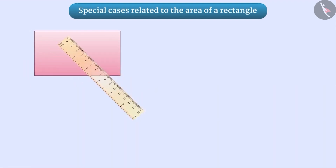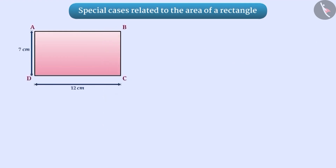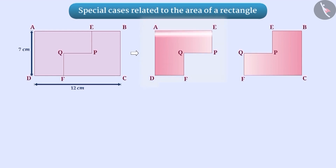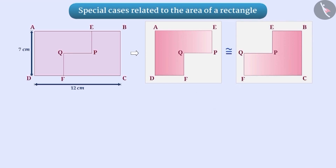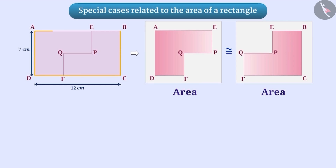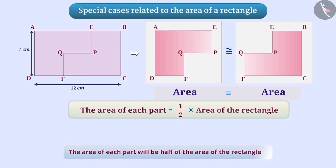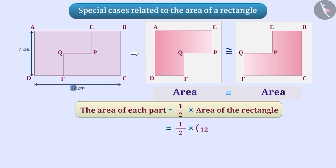Similarly, a rectangle ABCD of breadth 7 cm and length 12 cm is divided into two parts as shown in the figure. Here, AEPQFD is congruent to CFQPEB. The rectangle is divided into two congruent parts, therefore the area of one part is equal to the area of the other part. The area of each congruent part will be half of the area of the rectangle. Thus, the area will be half into 12 cm into 7 cm, which is equal to 42 square centimeters.